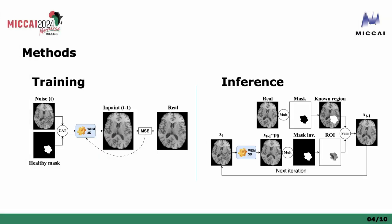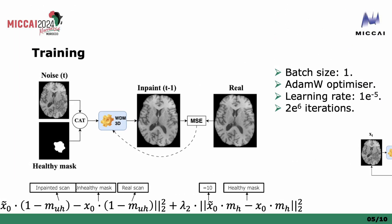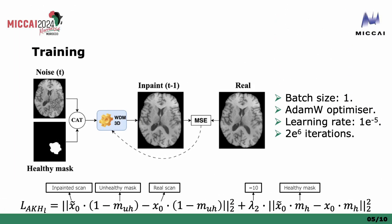In our solution, we decided to use diffusion models, as they have already surpassed GANs regarding realism. Here you can see the two pipelines used for training and for inference. The training process uses the voided scan with noise in the region to inpaint and the mask of the healthy region. The noise is only added in the region of interest and never in the remaining region.